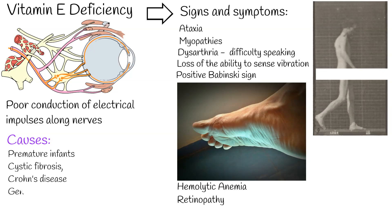Premature infants have low vitamin E reserves because vitamin E can only cross the placenta in small amounts, making deficiency more common among premature, low birth weight infants. Patients with cystic fibrosis fail to secrete pancreatic enzymes needed to absorb vitamins A, D, E, and K. Crohn's disease, exocrine pancreatic insufficiency, and liver disease may all impair fat absorption. In very rare cases, isolated vitamin E deficiency occurs due to a genetic mutation.